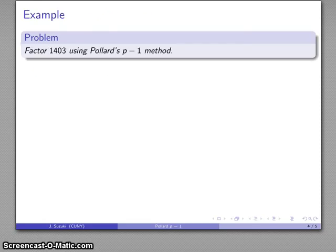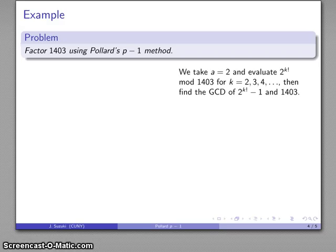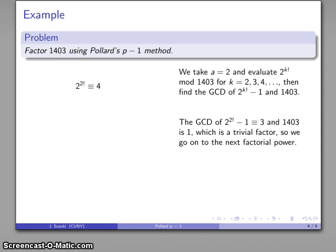For example, let's try to factor 1403 using Pollard's p-minus-1 method. We take a equals 2 and evaluate 2 to the k factorial mod 1403 for k equals 2, 3, 4, and so on. So let's figure that out. 2 to the 2 factorial equals 4. We find the greatest common divisor of 2 to the 2 factorial minus 1 and 1403. The GCD is 1, which is a trivial factor, so we'll go on to the next.